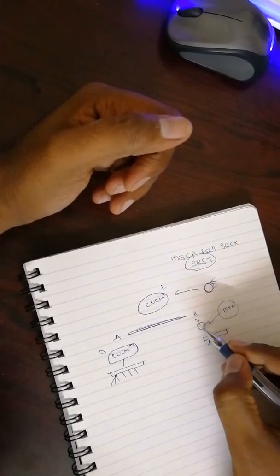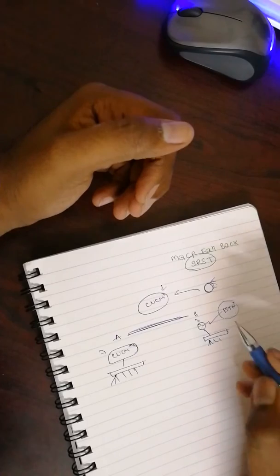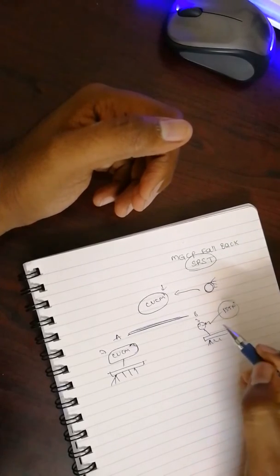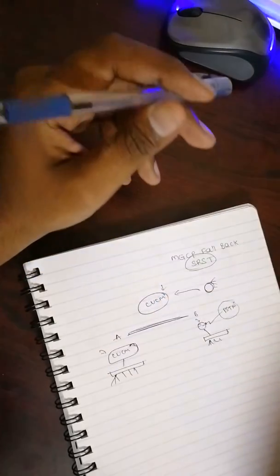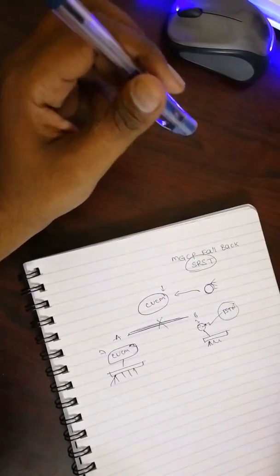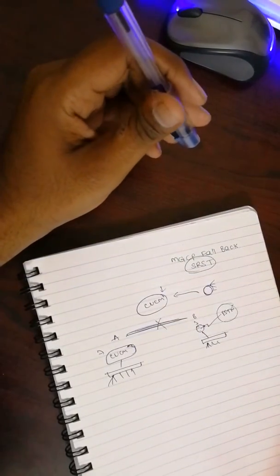Using this MGCP relationship, we can directly control this PSTN connectivity. But what in case of a scenario where this particular WAN link goes down?